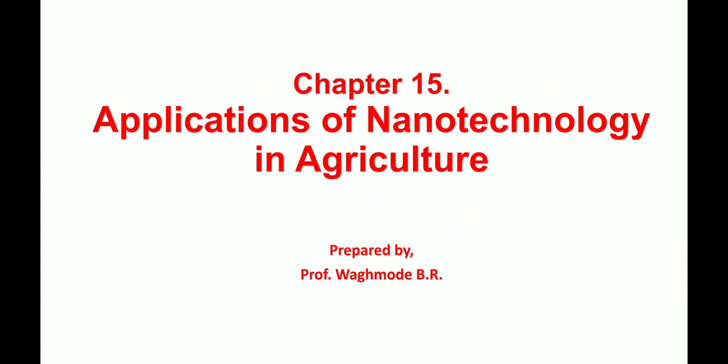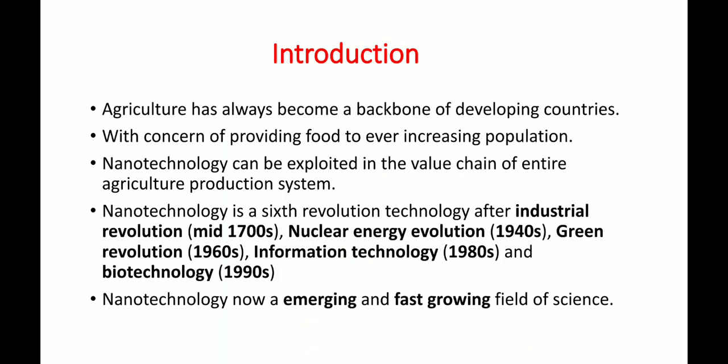Today we can see the topic on the applications of nanotechnology in agriculture. Nanotechnology is the science where the design, characterization, modification, preparation, and application of nanoparticles or materials as a source of nutrients or for the control of pests or diseases. The term nanotechnology is derived from the Greek word meaning small things or dwarf.